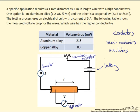Conductivity is designated as lowercase sigma, and it is the reciprocal of the resistivity of the sample, which we designate as lowercase rho. Thus, the lower the resistivity of a material, the higher the conductivity.